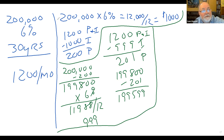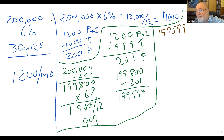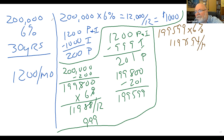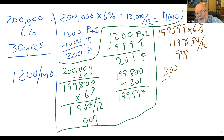So now I can do this again for the third month. I take my $199,599 and multiply that by 6%. That gives $11,975.94, divided by 12 — I need one month — that's $998. So I go back to my $1,200, subtract $998 for interest, and that means $202 goes to principal.